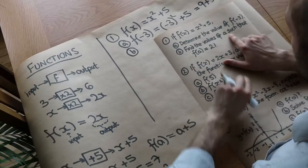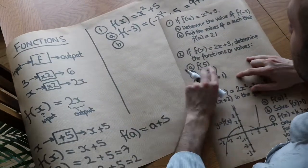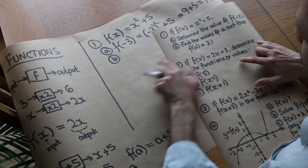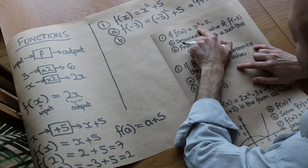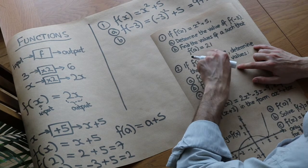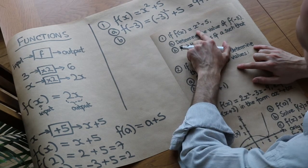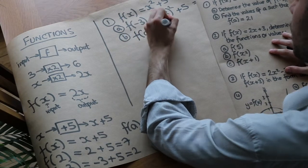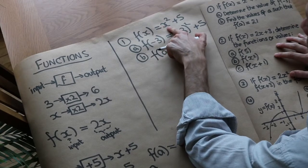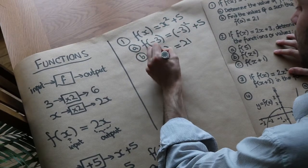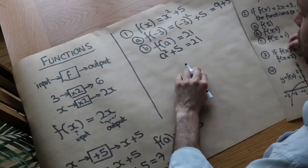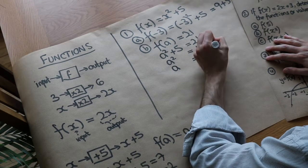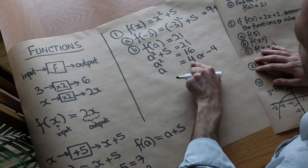Now part b says: find the values of a such that f of a is equal to 21. This is the opposite of before — it's basically saying if the output was 21, what would the input a be? Well, f of a equals 21, and f of a means we substitute x for a, so it's a squared plus five equals 21. Subtract five: a squared is 16. That means a is four or minus four, because minus four squared is also 16. We could write plus or minus four using the plus or minus symbol.